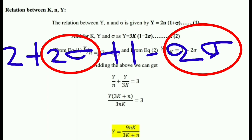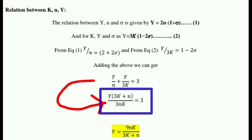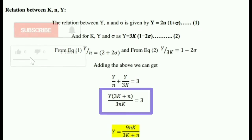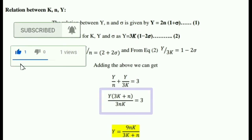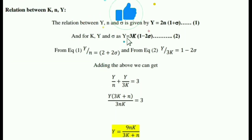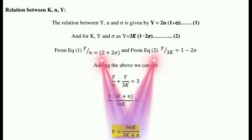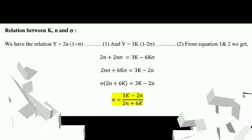So we have y/n + y/3k = 3. Rearranging, y(3k + n) / (3nk) = 3, and ultimately we get the final result: y = 9nk / (3k + n). This is the final equation for the relation between bulk modulus K, rigidity modulus N, and Young's modulus Y.